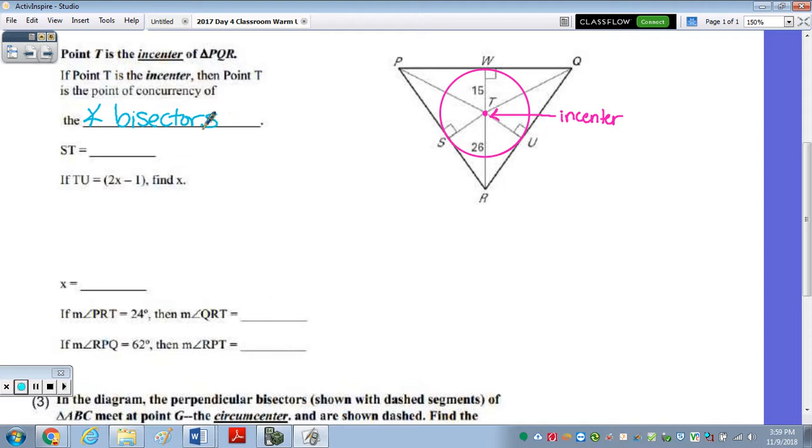We need to find the length of ST. Now ST is the segment drawn from the center to the outside of the circle, which is the radius. And if we look, they do give us the measure of another radius, WT is 15. And we know that all radii are congruent, so therefore ST is also 15.